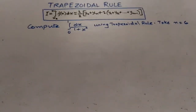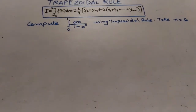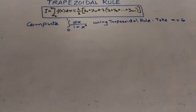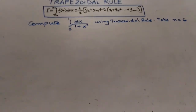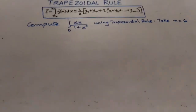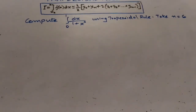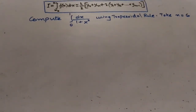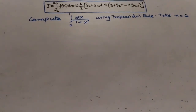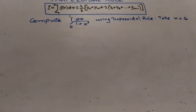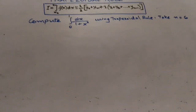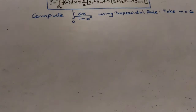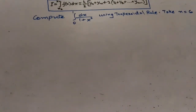Let us take an example to make the concept more clear. The question is: compute the integral of dx/(1 + x²) from 0 to 1 using the trapezoidal rule, taking n equals to 6.